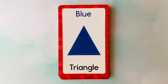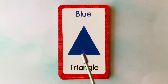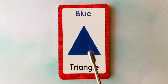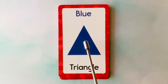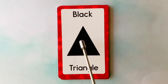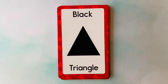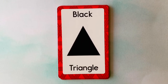Let's learn shapes and colors. This is a triangle. What color is this triangle? It's a blue triangle. This is also a triangle. What color is this triangle? It's a black triangle.